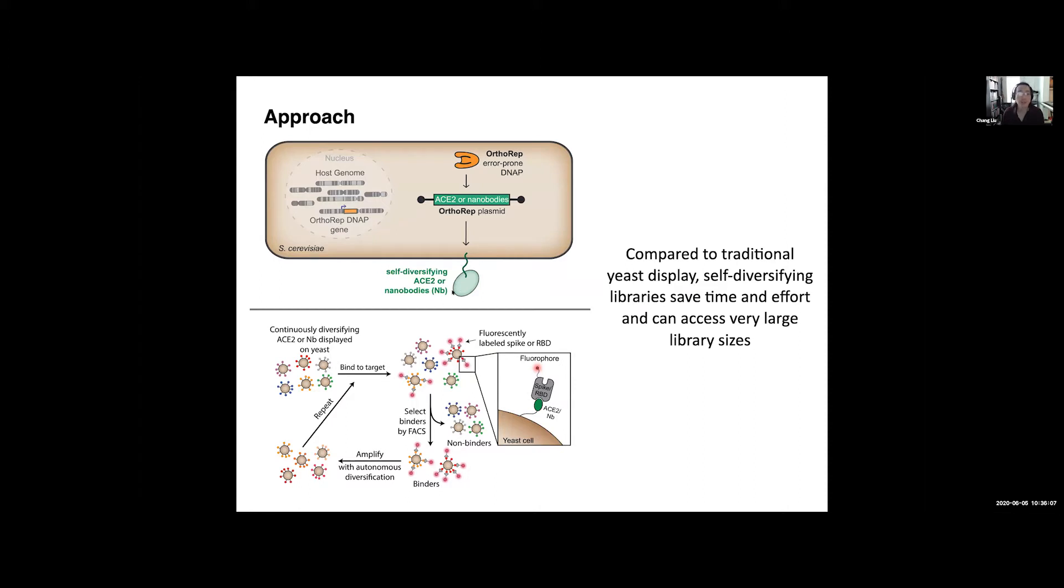So now you have these cells that are self-diversifying some protein scaffold, and we're simply going to FACS sort for binders, and then grow the cells, and then FACS sort for binders, grow the cells. And in this way, every time you do this, the new mutations that get you closer and closer to better and better binding will fix.